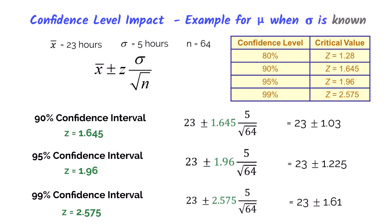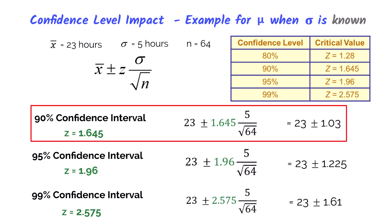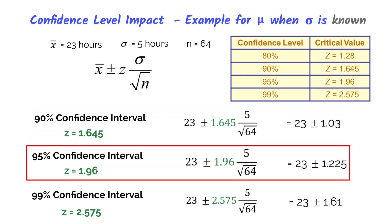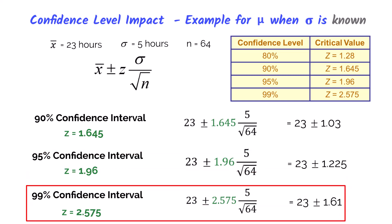What happens if we modify our confidence level, keeping the sample mean of 23 hours, standard deviation of 5, and sample size of 64 the same? The only thing changing is the confidence level, which requires a different critical z-value. The margin of error for a 90% confidence interval is 1.03. When we increase confidence to 95%, the z-critical value increases to 1.96 and we get a wider interval. The same occurs at 99% confidence — as the confidence level increases, so does the margin of error, making the interval wider.